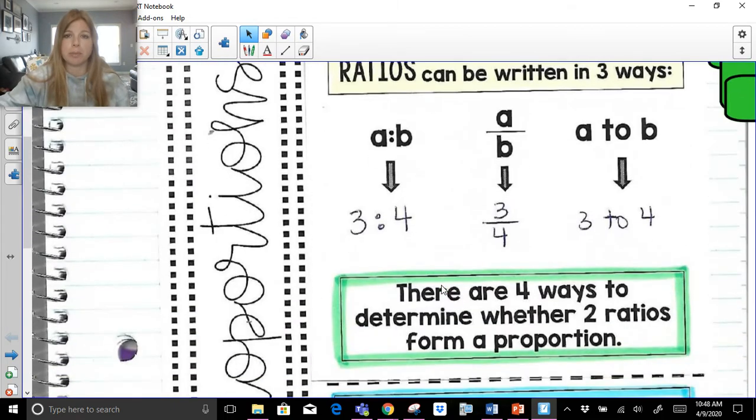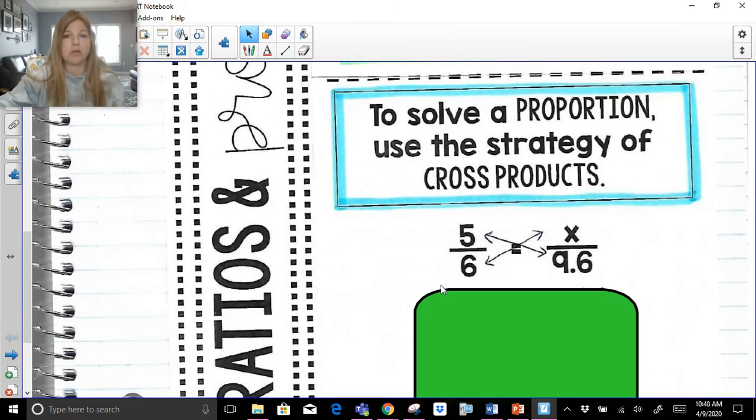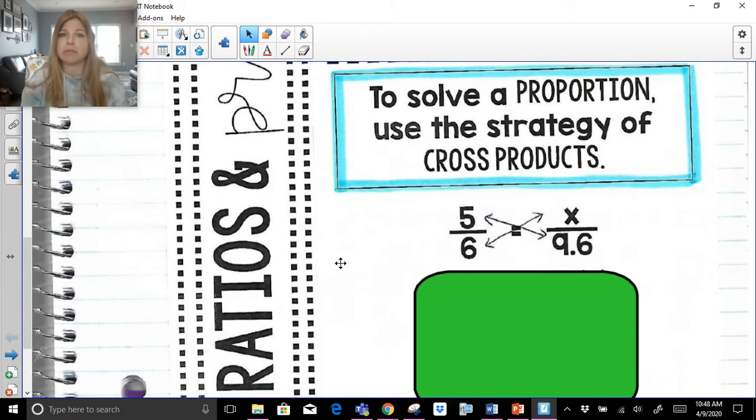So now that we know what a proportion is supposed to be like, two fractions that equal each other, we're going to now solve proportions. And to solve a proportion, I generally always encourage my students to use cross products. However, sometimes proportions can easily be set up, solved using the common multiplier as well. So if you're making the connection from denominator to denominator, or numerator to numerator, totally go for it.